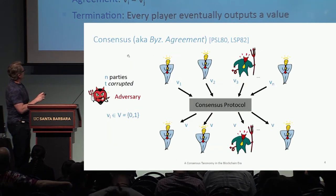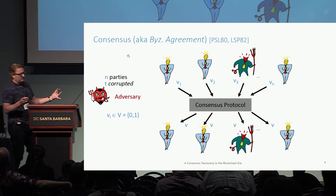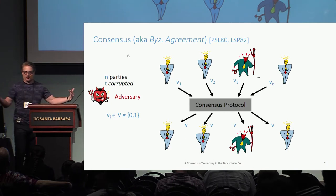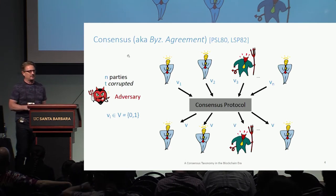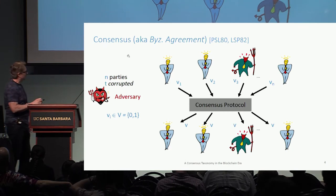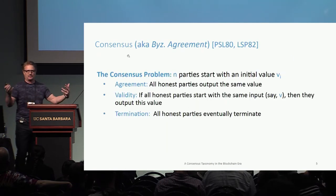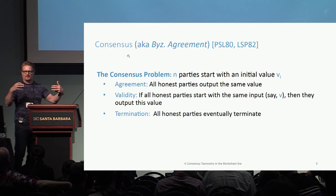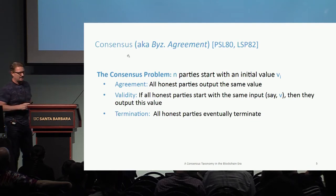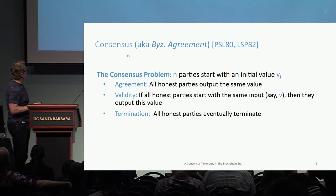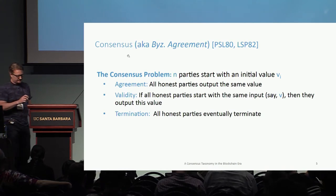The consensus problem is actually the version where everybody has an input and everybody is supposed to have an output satisfying these basic properties: everybody has to agree, and if all parties started with the same value, that has to be the outcome — that's a validity or non-triviality condition — and of course this thing has to terminate.